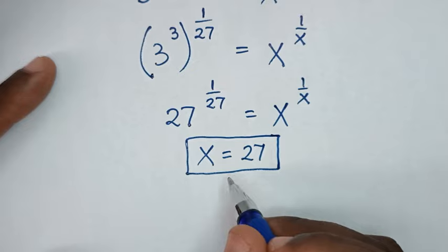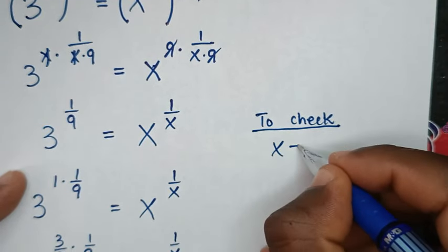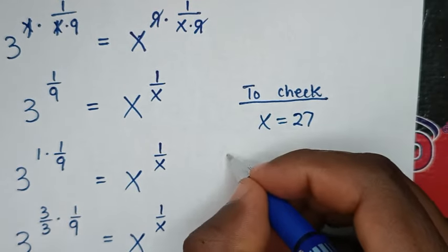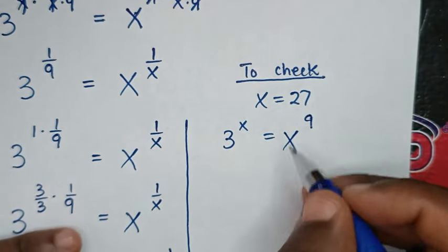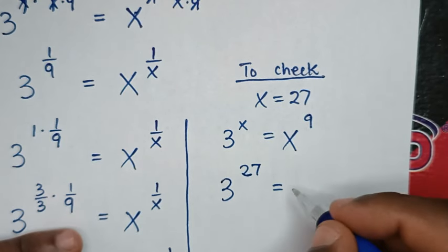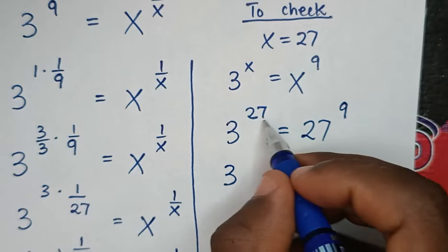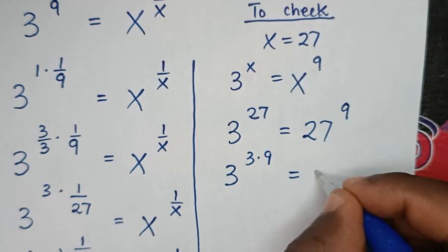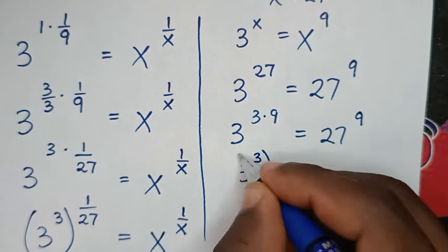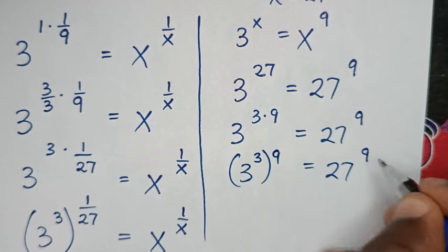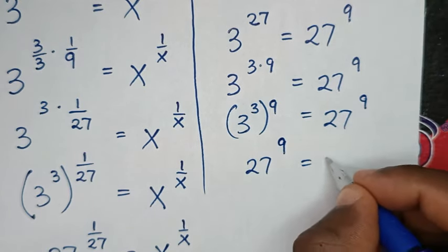Now let's check this answer. To check for x equal to 27 from our problem, which is 3 power of x is equal to x power of 9, we substitute x which is 27. So it will be 3 power of 27 is equal to 27 power of 9. Now 27 is the same as 3 times 9, so we place 3 power of 3 inside the bracket with power of 9 outside, equal to 27 power of 9. Inside the bracket, 3 power of 3 is 27, giving 27 power of 9 is equal to 27 power of 9.